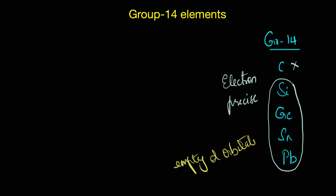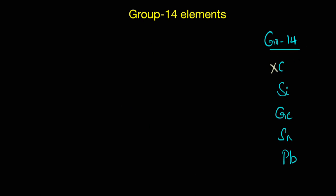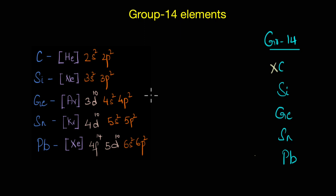You see, except carbon all other elements can expand their octet due to the presence of empty d orbitals. There is no 2d orbital in the second shell so carbon cannot expand its octet, but silicon has 3d, germanium has 4d, tin has 5d, and so on.